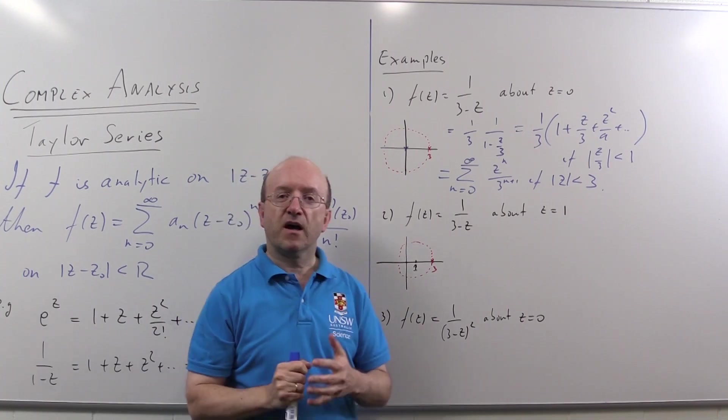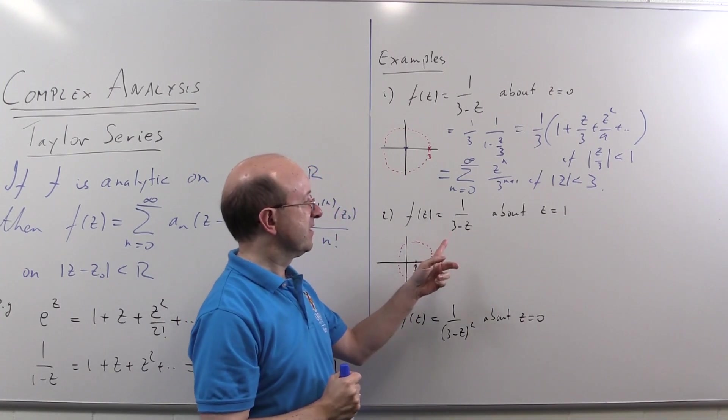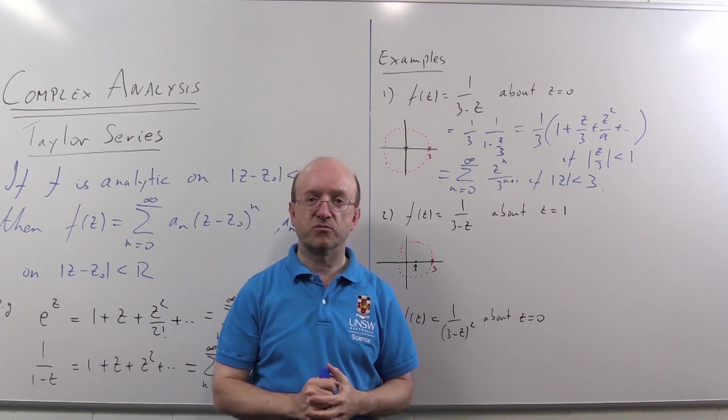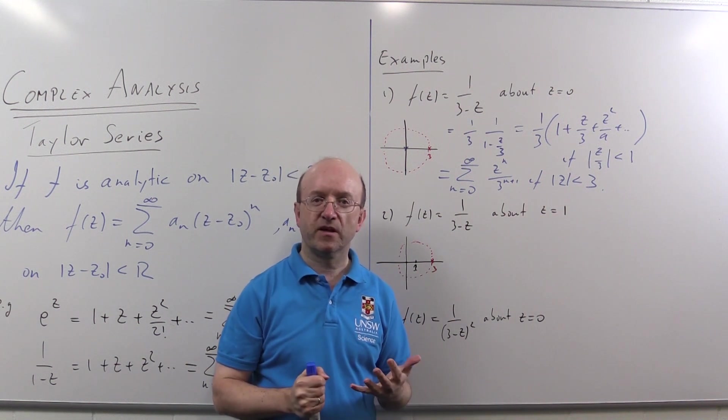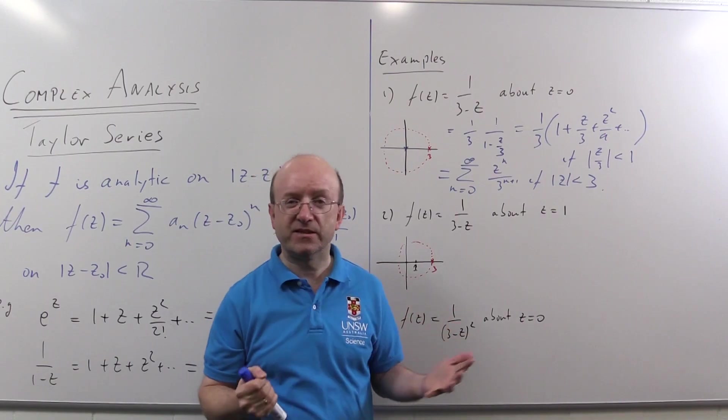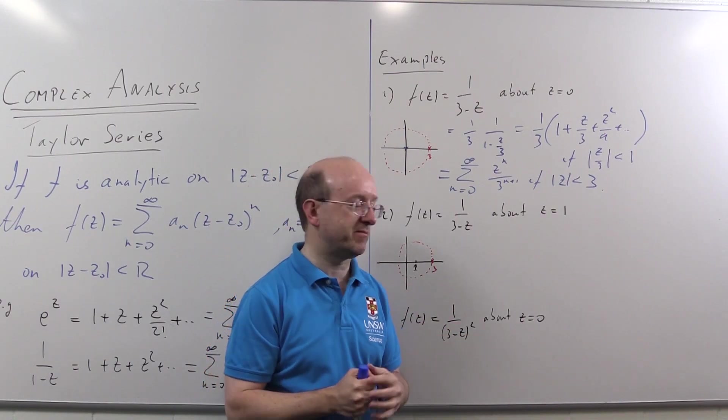In the second one, we'll look at the same function, but in this case about z equals one. We'll get a different series. A given analytic function has infinitely many series. It just depends on which point you expand them around.